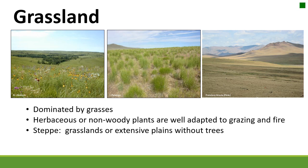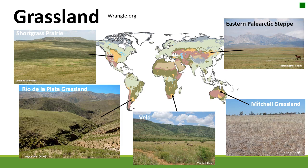We'll often hear grasslands referred to as steppe — for example, we have the sagebrush steppe in western and southern Idaho. Steppe refers to a grassland or extensive plain without trees. Grasslands are found on every continent except Antarctica. Wrangle.org is a great source to understand these different rangeland biomes. In the United States we have the short grass, mixed grass, and tall grass prairies; in southern Africa the veld grasslands; and in Australia the Mitchell grasslands.